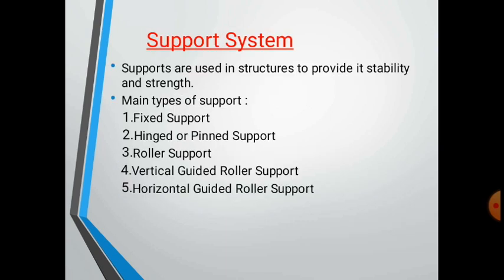Before moving to the analysis part, let us recall the support system in 2D and 3D, which we studied in the previous semester in Mechanics or SOM. Supports are structural components that provide strength and stability to the structure. The main types of support are: fixed support, hinge support, roller support, vertically guided roller, and horizontally guided roller support.